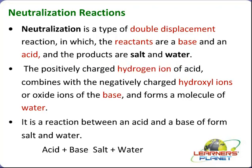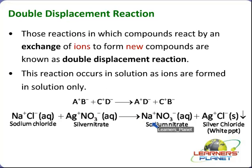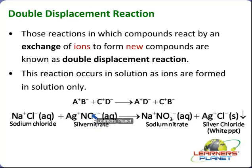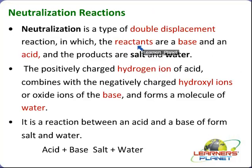In our previous slide, what we saw was that there is sodium chloride and silver nitrate giving sodium nitrate and silver chloride. Here, sodium chloride is a salt and silver nitrate is a salt — both are salts reacting to form two salts again. This is a double displacement reaction where nitrate is replacing chloride in sodium chloride and chloride is replacing nitrate. But neutralization is a different type of double displacement reaction.